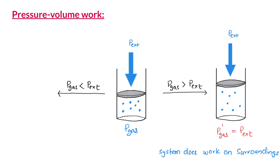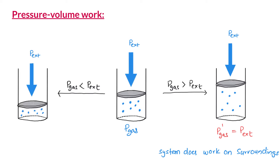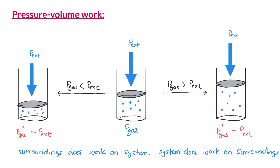On the contrary, if the pressure of the gas is lower than external pressure, the piston moves inwards, compressing the gas sample. During the compression, the pressure of the gas inside the cylinder increases and compression continues until the pressure inside equals the external pressure. During the compression, the surroundings does work on the system.